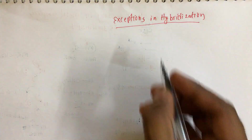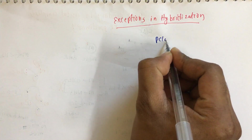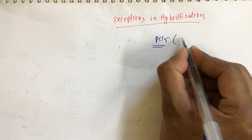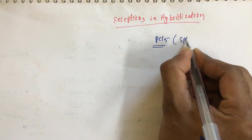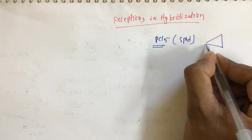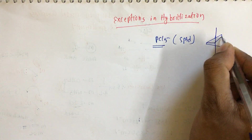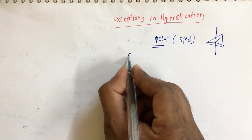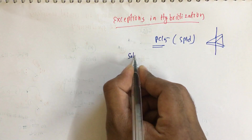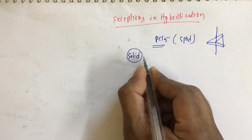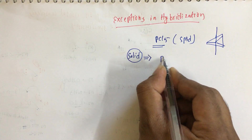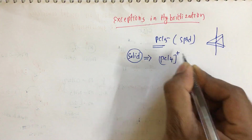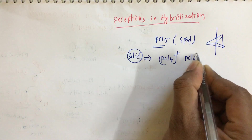The first example is PCl5. In the liquid state, PCl5 undergoes sp3d hybridization and the shape is trigonal bipyramidal. But in the solid state, PCl5 exists as PCl4+ and PCl6-.